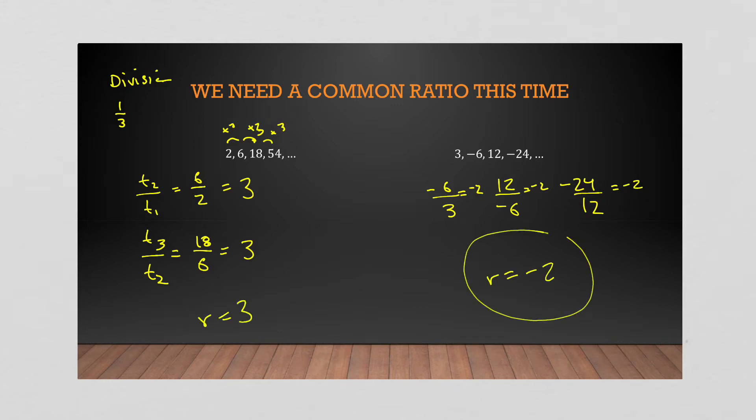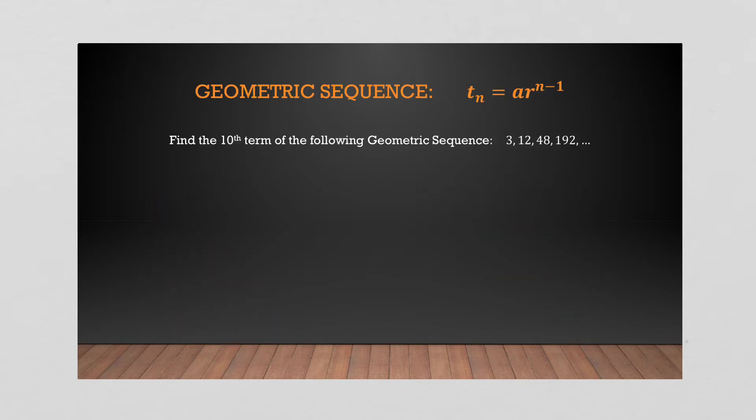We are multiplying from term to term, or dividing to get our ratio from term two to term one, term three to term two, and so on. That subtle difference changes our equation. In the workbook there's a brief proof on how we arrive at that equation — we won't dive into that here. This will focus on how to work with the equation, similar to arithmetic: identify the information you have and it becomes a color-by-numbers scenario.